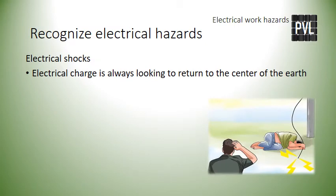Electrical charge is always looking to return to the center of the earth — keep this important concept in mind. Electrical charge can only be harnessed by enclosing it in insulation, and can be restrained by cutting off its path of travel, usually through a switch. For example, when electric charge is in a wire, it is insulated by the wire's flexible protective jacket. However, if the electric charge finds the slightest cut in that wire, it can use that shortcut to go to a conductor. Persons can become the shortcuts or conductors in which the electrical charge can travel, and receive an electrical shock.